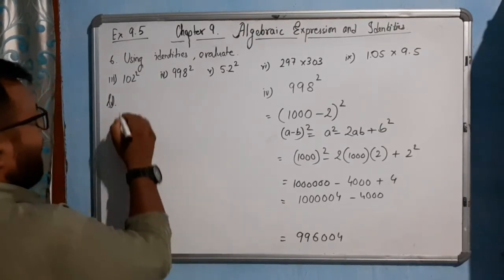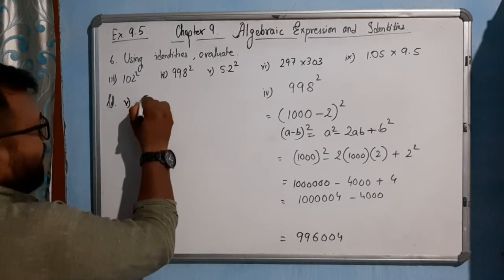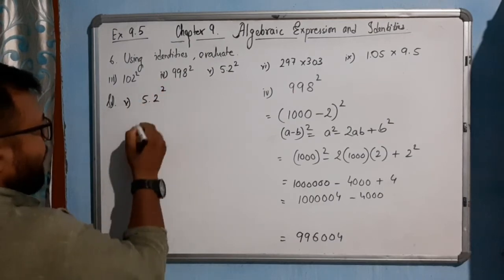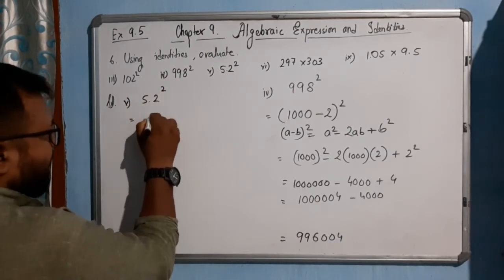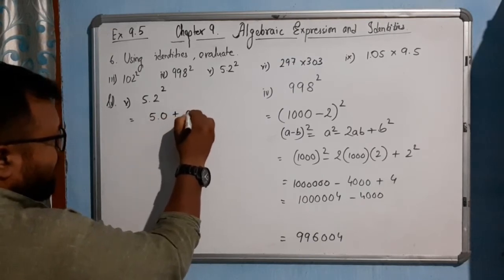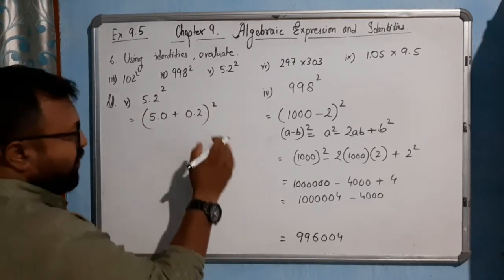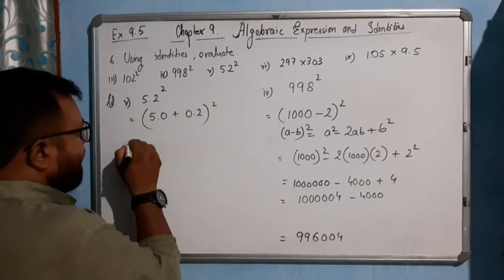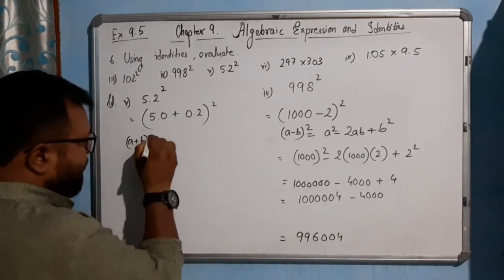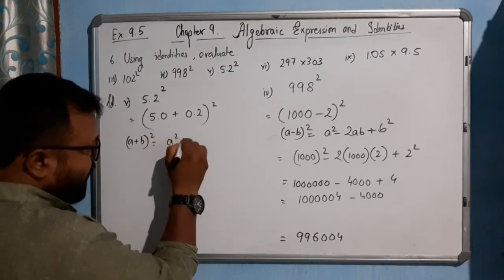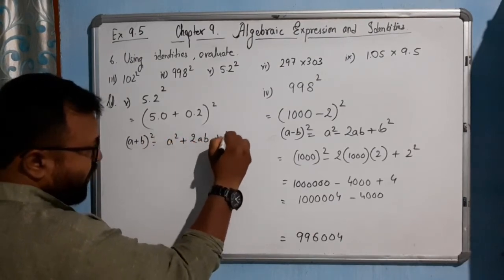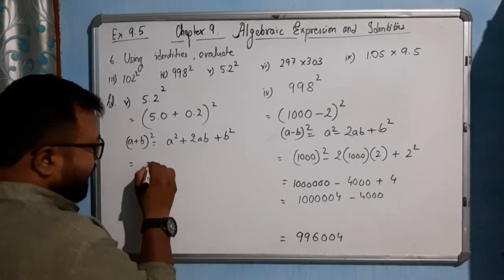In 5.2 square, we can write 5.0 plus 0.2 whole square. So a plus b whole square form means a square plus twice ab plus b square.